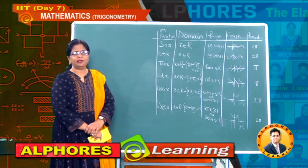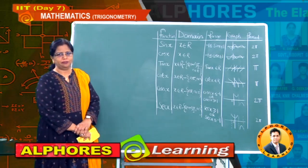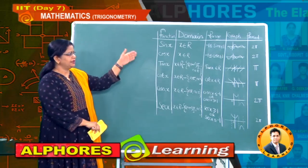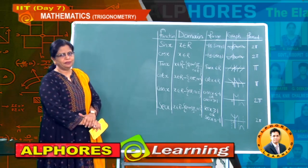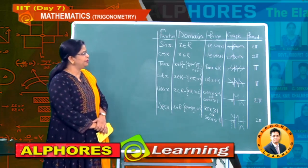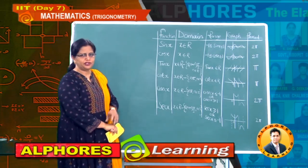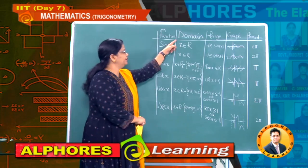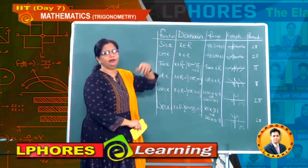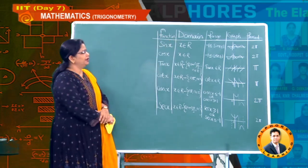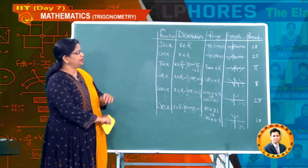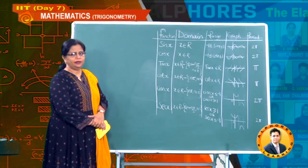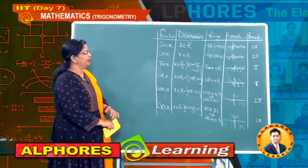Hi students, welcome to Alpho's e-learning program. Have a glance at this tableau form. You are finding two new names here — those are domain and range. Now, what are these new terms? Domain and range.